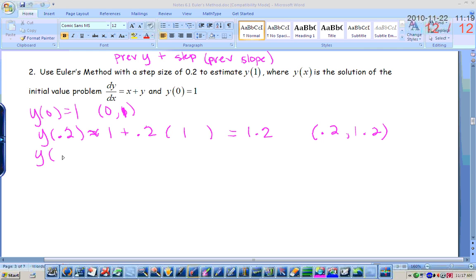Alright, now, if I go over another 0.2, then what's my new x value? 0.4. So y of 0.4 is approximately the previous y value, which is 1.2 plus the step size is 0.2, and then the slope at the previous point. And slope is x plus y for this problem, so 1.4.